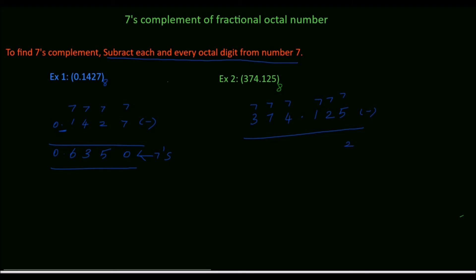7 minus 5 is 2. 7 minus 2 is 5. 7 minus 1 is 6. Point. 7 minus 4 is 3. 7 minus 7 is 0. 7 minus 3 is 4.